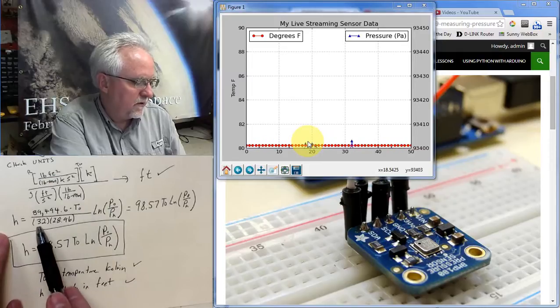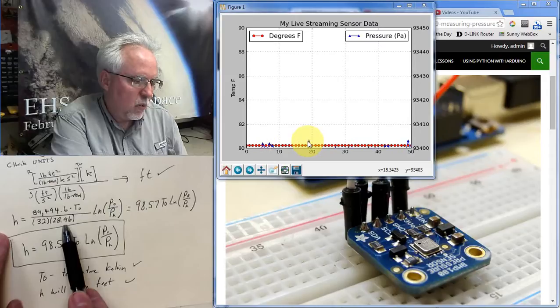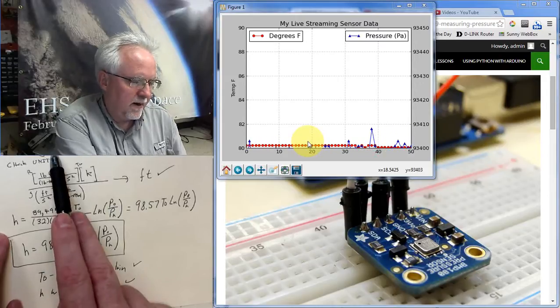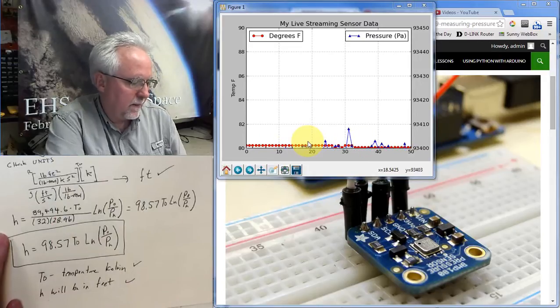divided by 32 feet per second squared for the acceleration of gravity, and then 28.96 pounds per pound mole for the molarity of the air, the molar mass of the air.